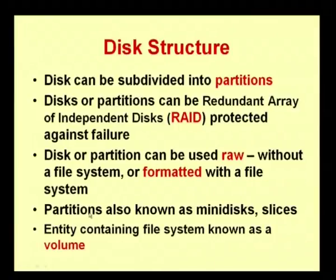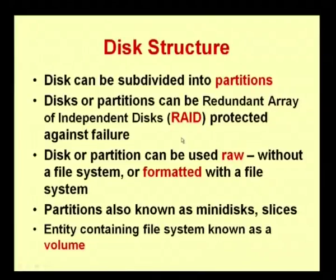This partition is also called a mini disk or a slice of the entire disk. For example, if you have a hard disk of 500 GB and you create C drive, D drive, and E drive — allocating 200 GB to C drive and 150 GB to D drive — the remaining space can be allocated to E drive. This allocation is what is called a mini disk. C drive will act as a separate disk but is part of the entire hard disk. This is also called slicing the entire hard disk, and that is what is called a disk structure.